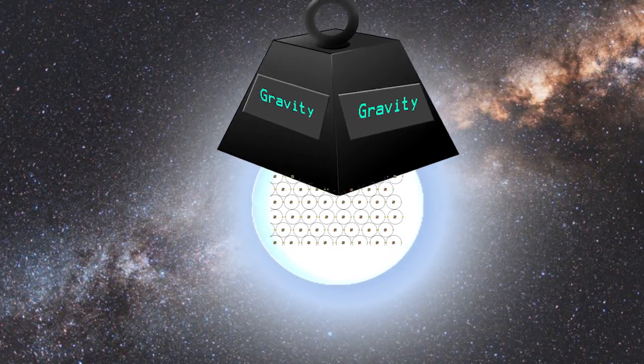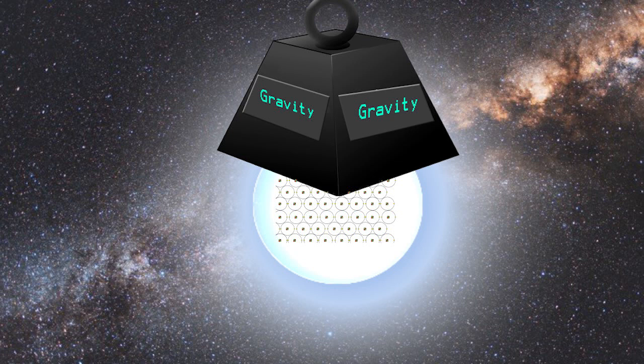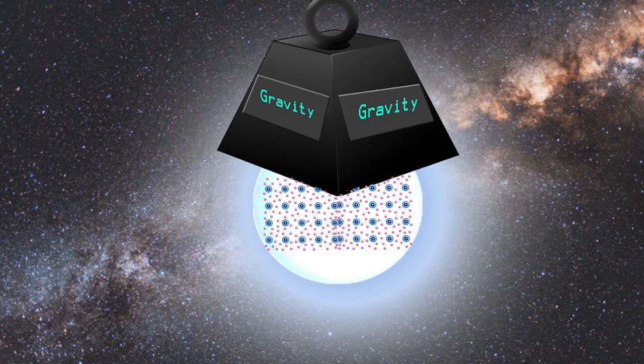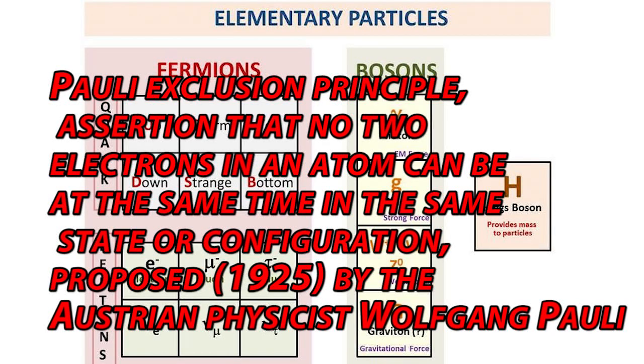As the matter inside the star is compressed, electrons get ripped off the atom. What remains is positive ions and a sea of electrons. But these electrons cannot be compressed further because of the Pauli exclusion principle, which vaguely says no two identical particles can have the exact same position.